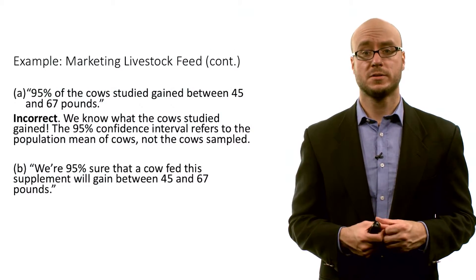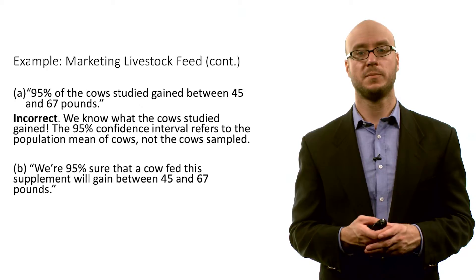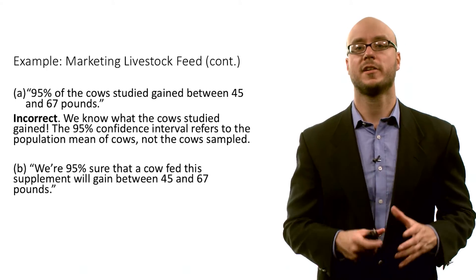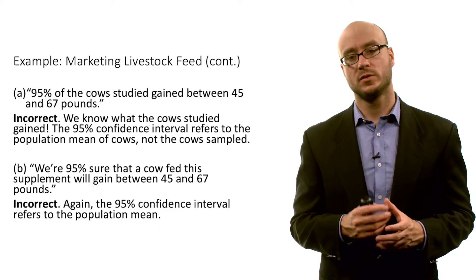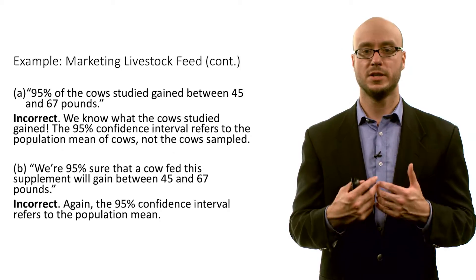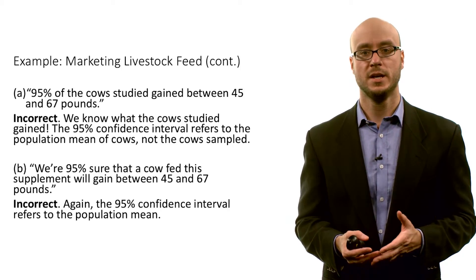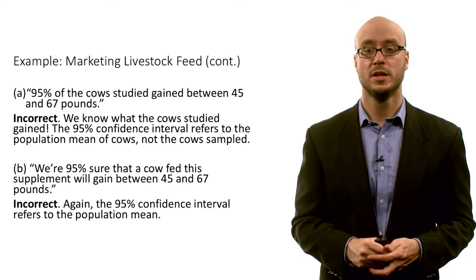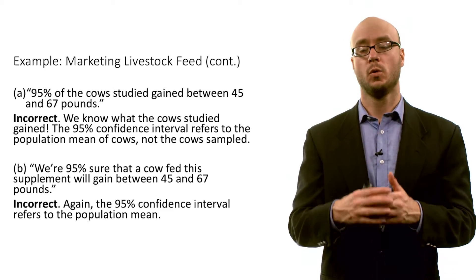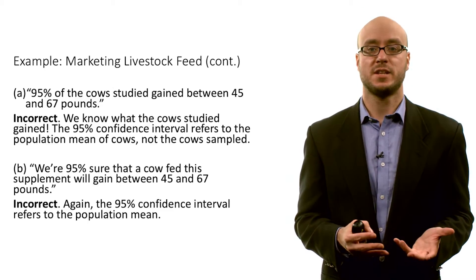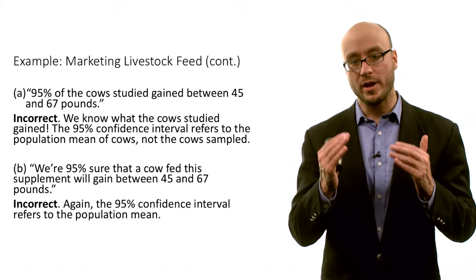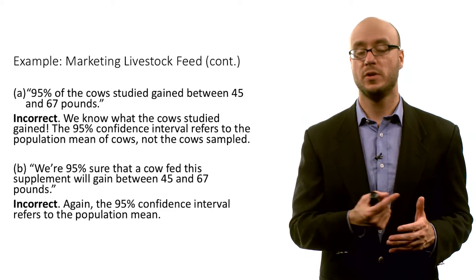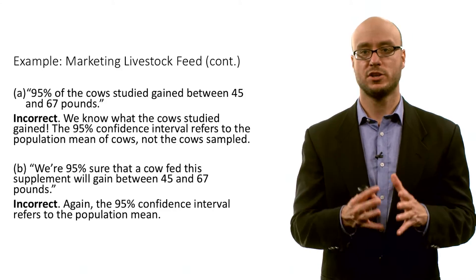The marketers might also say: we're 95 percent sure that a cow fed this supplement will gain between 45 and 67 pounds. Again, this is incorrect. The 95 percent confidence interval refers to the population mean — it's a way of using sample data to make some claim about the population mean. When marketers say they're 95 percent sure that a particular cow will gain between 45 and 67 pounds, they're talking about some individual cow. We don't know if a particular cow fed this supplement will gain between 45 and 67 pounds. What we are 95 percent confident of is that the true population mean weight gain is within this interval — we're not sure about any particular cow.